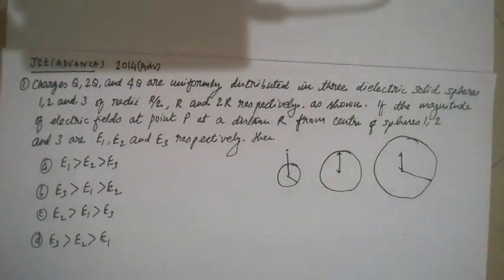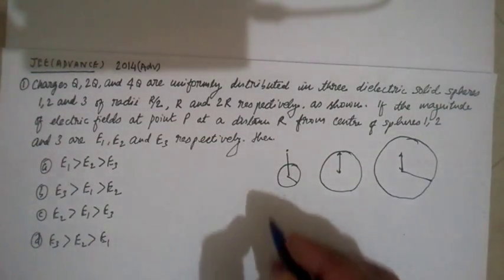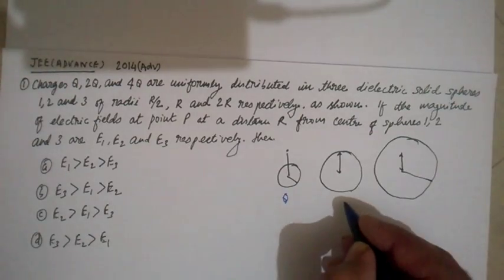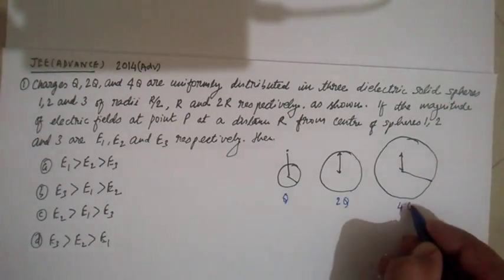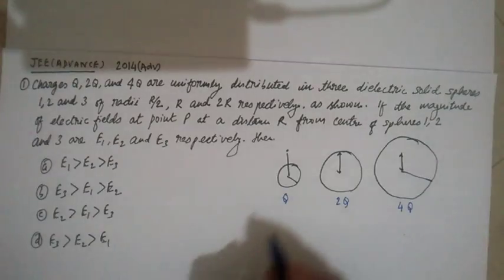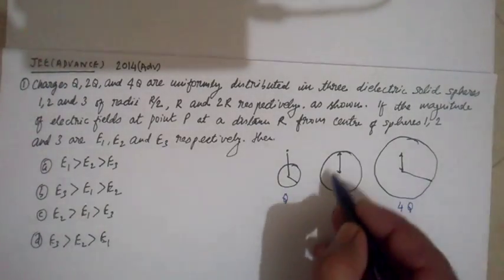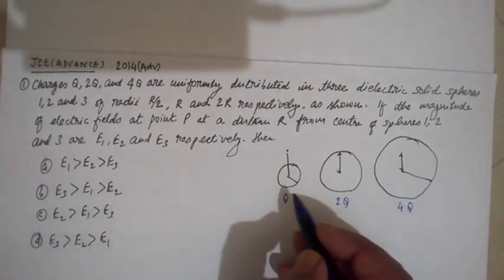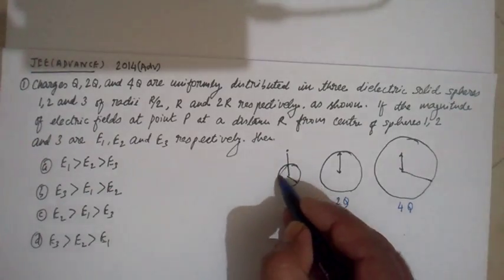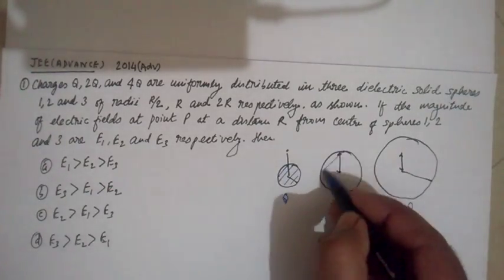This is a JEE Advanced question asked in 2014, and the question is from electrostatics. Let us first read the question. There are charges Q, 2Q, and 4Q uniformly distributed in three dielectric solid spheres.